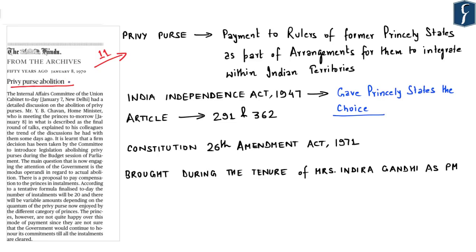The first question is: what is a privy purse? In India, a privy purse was a payment made to the former princely states or royal families for them to integrate within Indian territories. When India got its independence in 1947, there were roughly more than 560 princely states. In order to make these princely states join Indian territory, privy purse was a settled offer whereby payment would be made to these rulers by the Government of India.